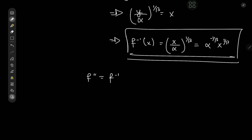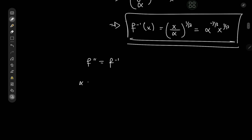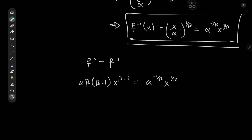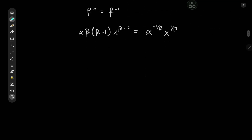We have both of these functions and our goal is to solve f double prime equals f inverse. So we just need to equate these two forms: alpha times beta times beta minus 1 times x to the beta minus 2 equals alpha to the negative 1 over beta times x to the 1 over beta. We can equate the coefficients and the exponents on both sides to get a couple of equations to work with. For the coefficients we have alpha times beta times beta minus 1 equal to alpha to the negative 1 over beta.